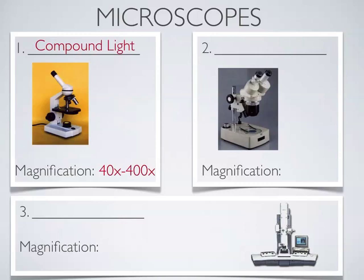The other type is called a dissecting microscope. The main difference you might notice is that there are two eyepieces. Another difference is in where the light comes from. In the compound microscope, light comes from the bottom, goes up through the stage, through the object you're looking at, into the lens, and up to your eye. In the dissecting microscope, light comes from above, bounces off the object, and then goes up into the lens to your eye.